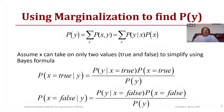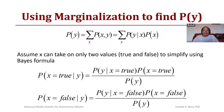Using marginalization to find P(Y), we can find P(Y) by using the summation over all X of the probability of X and Y, which can also be written as the summation over all X of the probability of Y given X times the probability of X.